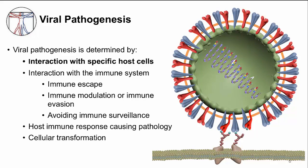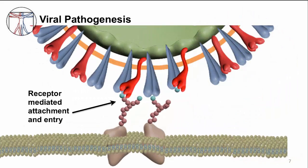Viral pathogenesis can be determined by several factors. The first is how a virus interacts with a specific host cell. Disease manifestations in a human are dictated by the specific host cell that the virus attaches to and enters. For example, influenza virus — shown as the cartoon image on the slide — attaches to sialic acid residues on the glycoproteins of the host's epithelial cells. Something as small as a sugar residue, that little blue circle, determines which cells influenza can attach to and enter.